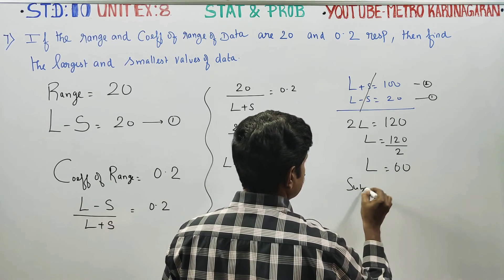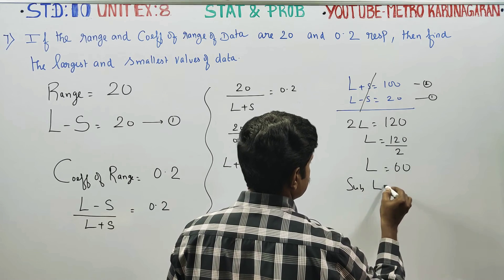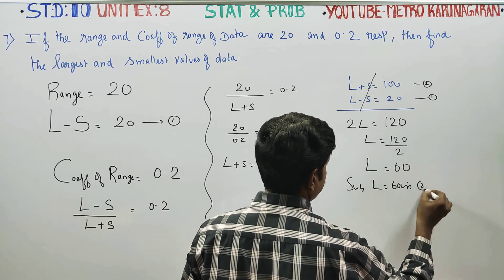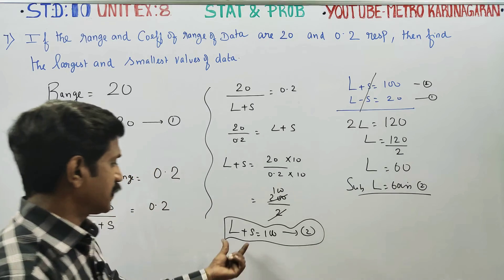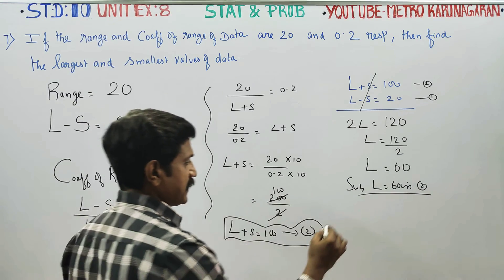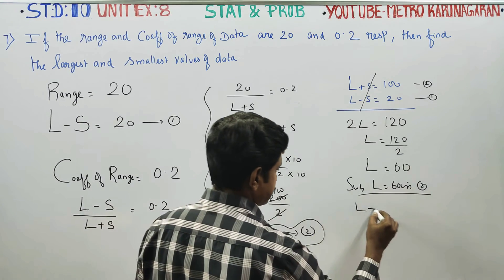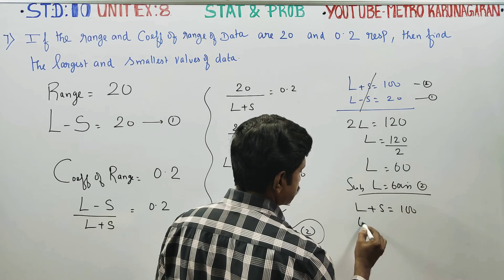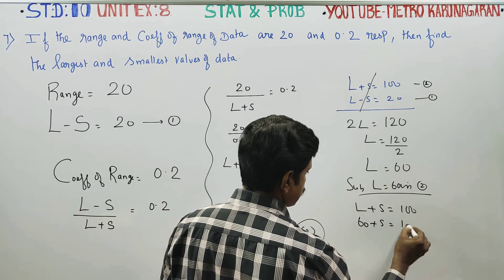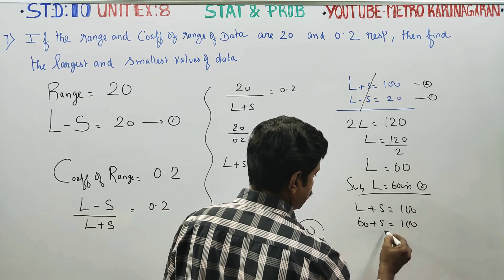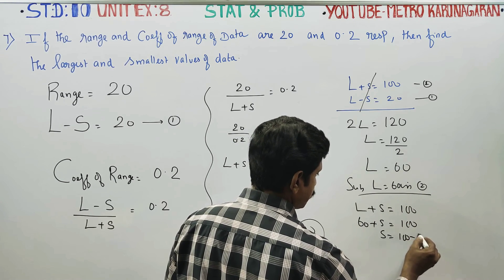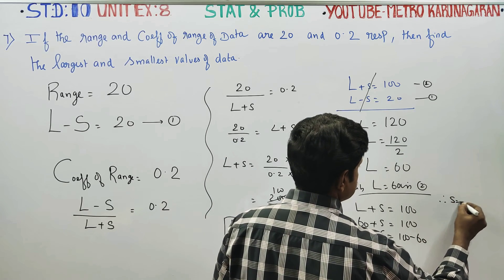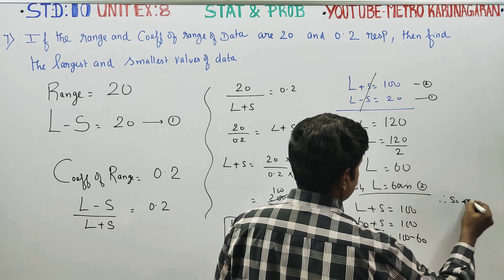Substitute L equals 60 into equation number 2: 60 plus S is equal to 100. Therefore S is equal to 100 minus 60, so S is equal to 40.